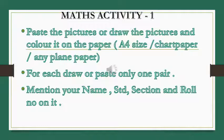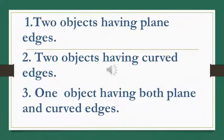On that paper, you have to mention your name, standard, section and also the section wise roll number on it. So after writing all these, you have to either paste the objects or draw the objects.